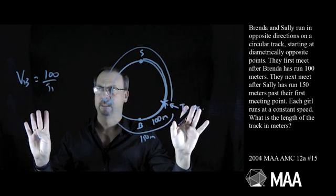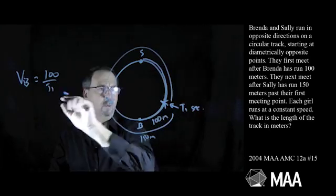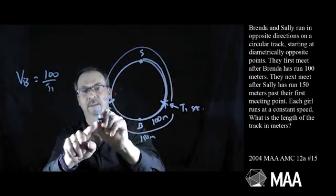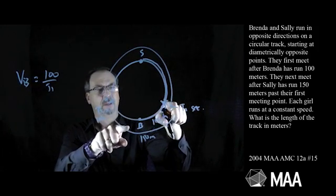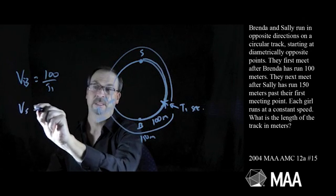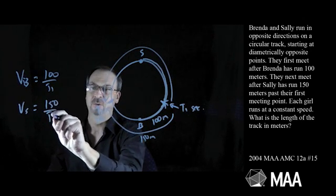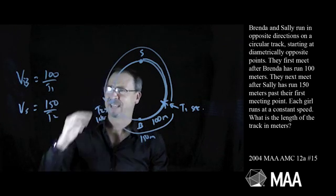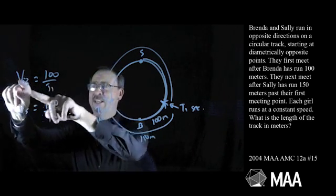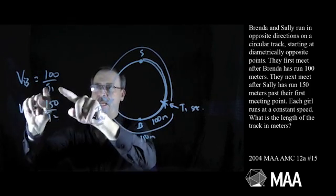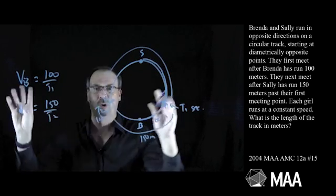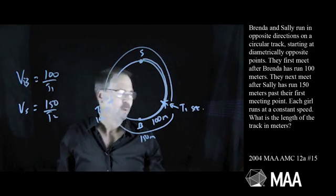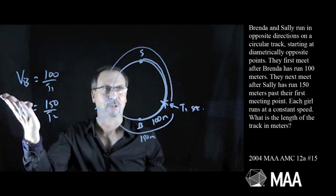Okay, what can I do now? Maybe they meet after another t2 seconds — t2 seconds later. Sally runs 150 metres in t2 seconds, so Sally's velocity is 150 metres in t2 seconds. But I've got four unknowns: Brenda's speed, Sally's speed, time t1 and time t2, with just two equations. I can't solve for that — not enough information. We want the length of the track in metres, and I haven't even attended to that at all.